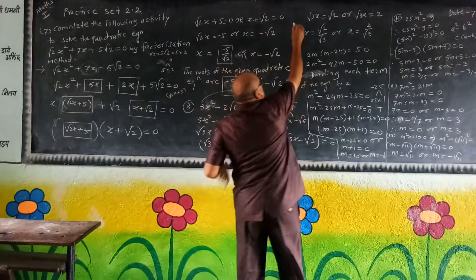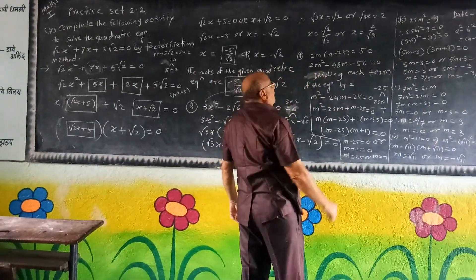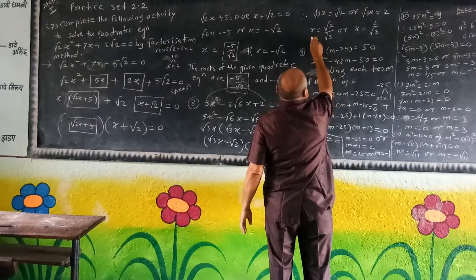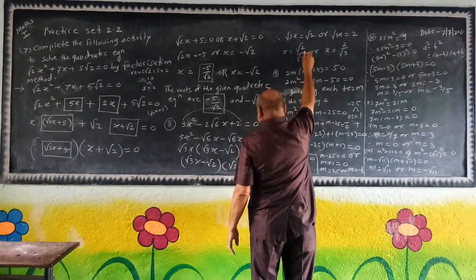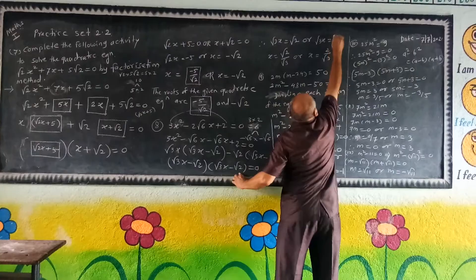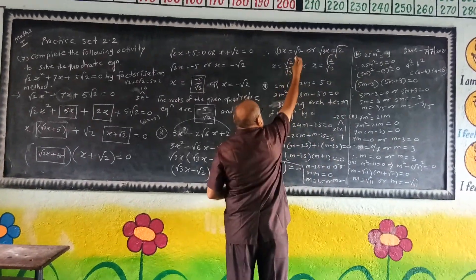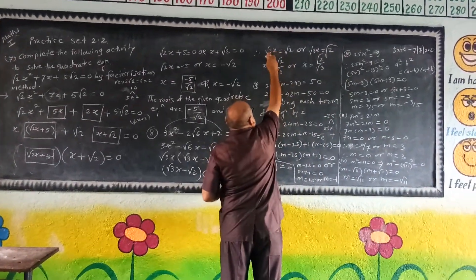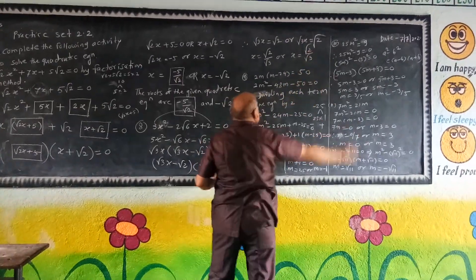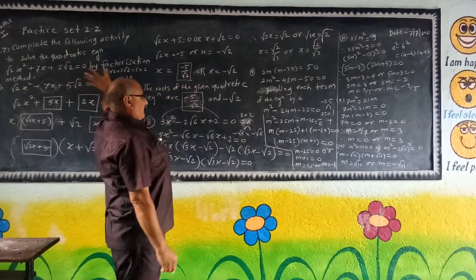Therefore root 3 x is equal to root 2, or root 3 x is equal to root 2. So x is equal to root 2 divided by root 3, or x is equal to root 2 divided by root 3. These are the roots of the given equation.